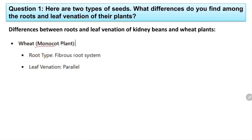Wheat is a monocot seed. If it is monocot, the root type will be fibrous and leaf venation will be parallel. We have already learned about this in our classes. If you have not watched that video, please do watch it. In most cases, if the seed type is monocot, the root type is fibrous and the leaf venation is parallel.